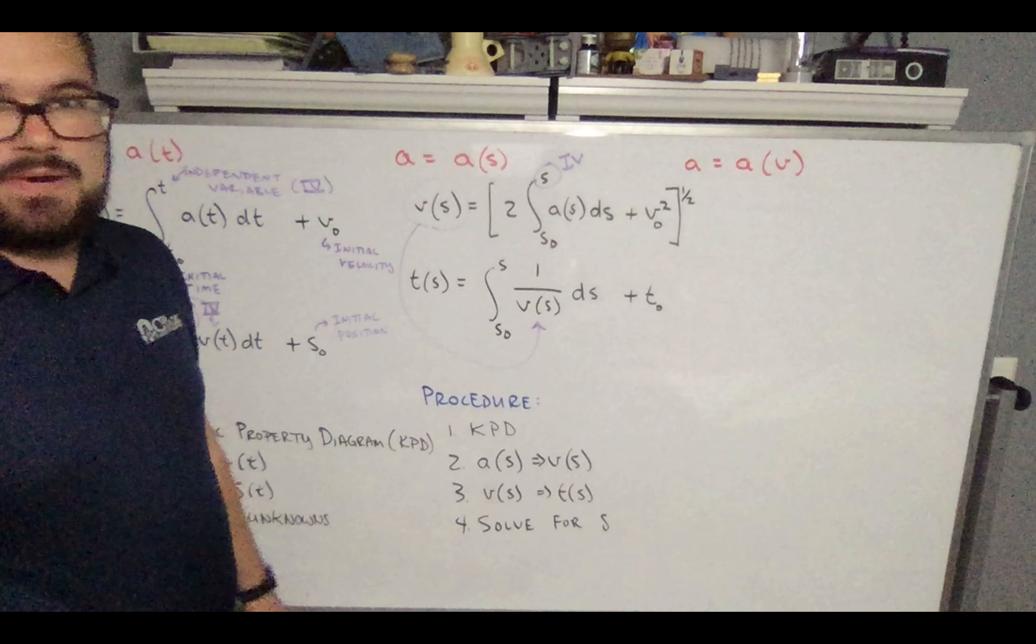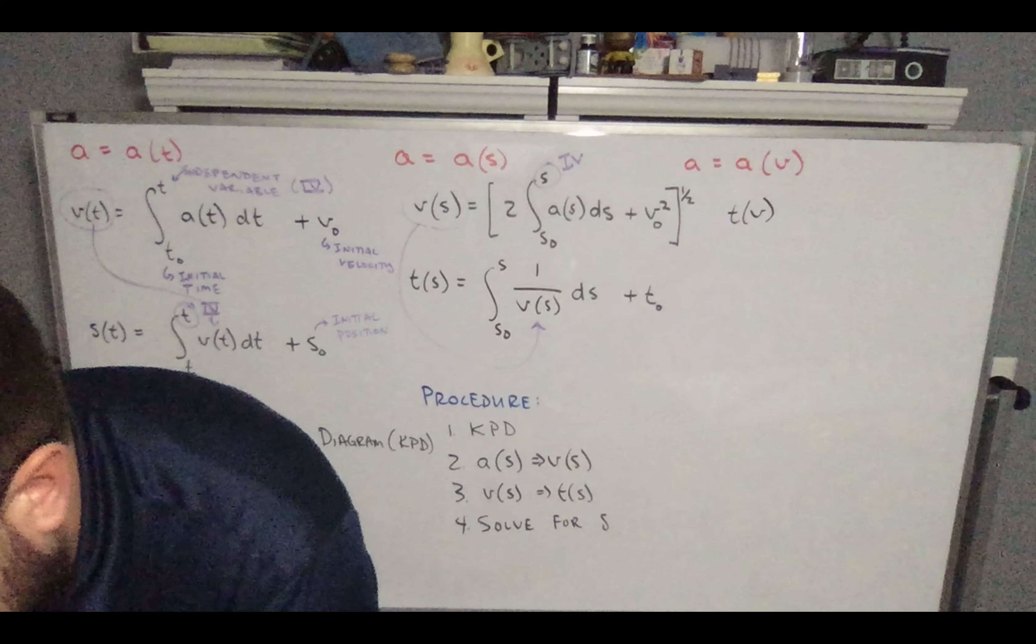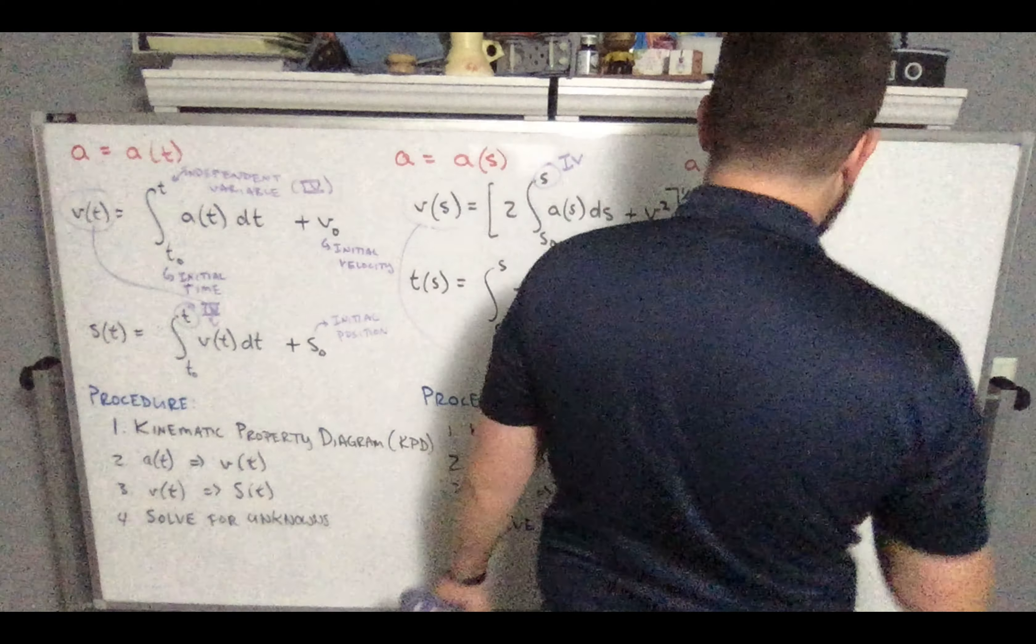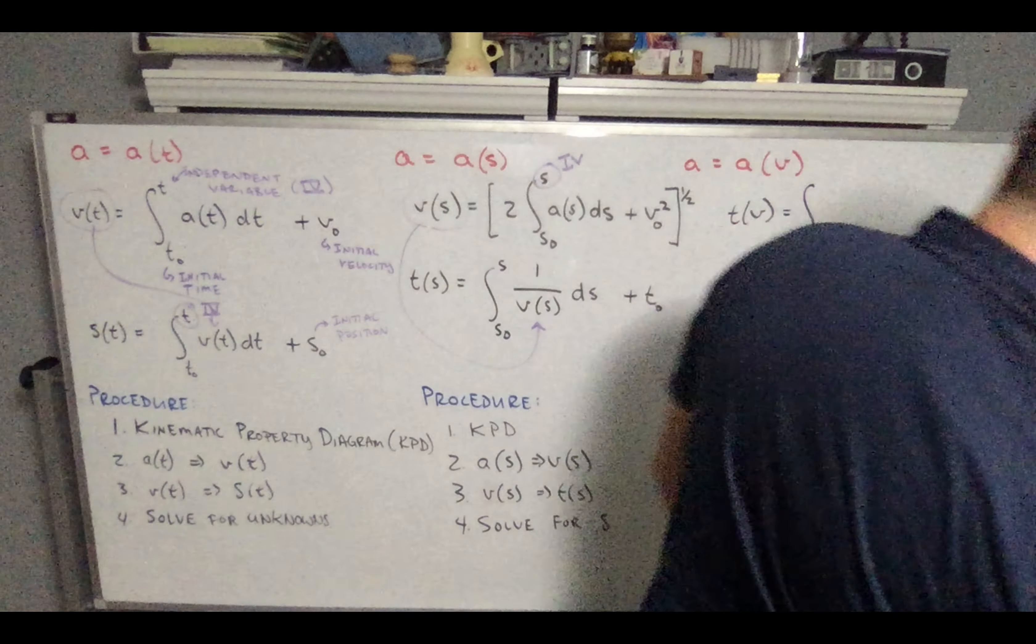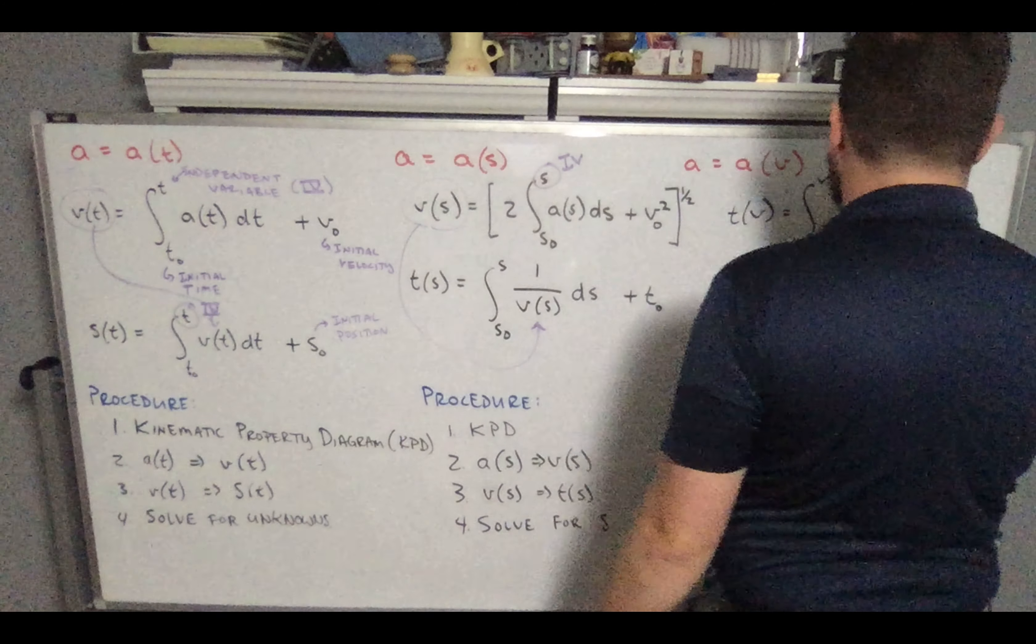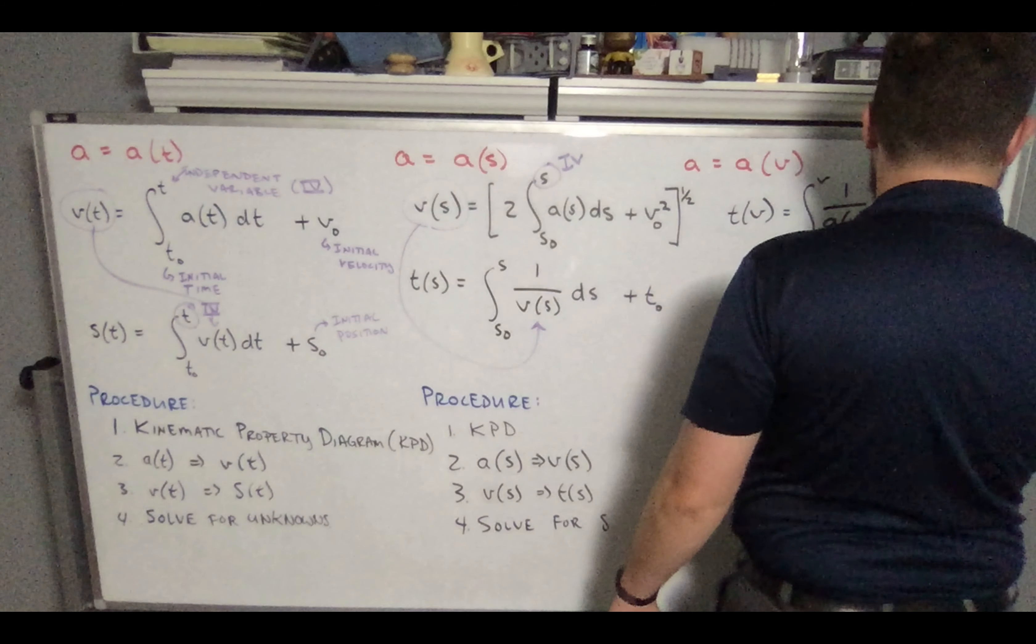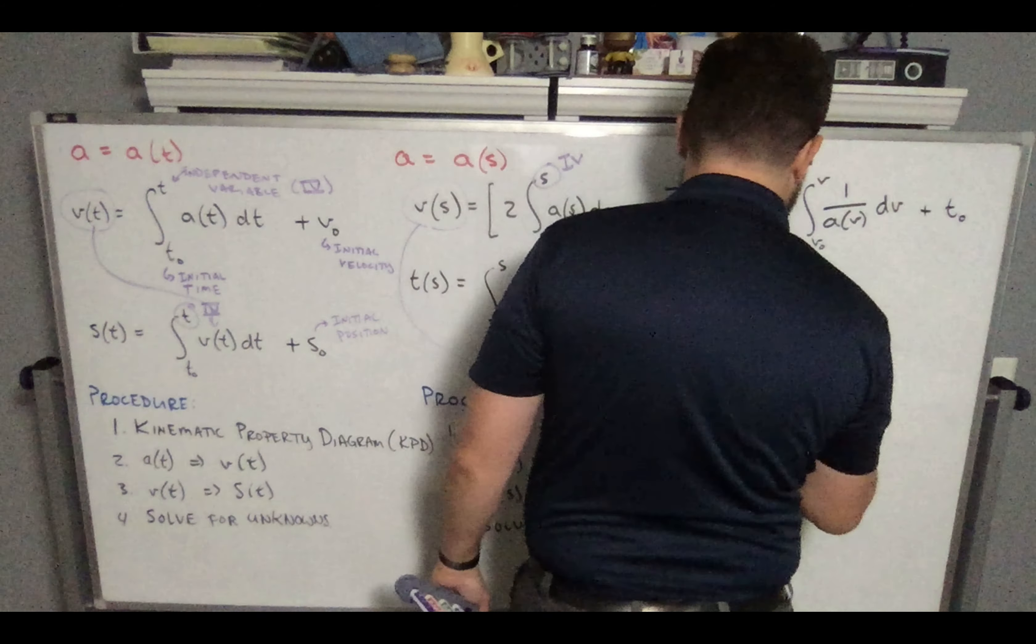Finally, we can look at acceleration as a function of velocity, where we're going to have time as a function of velocity. And we would integrate from v naught to v, where that velocity is our independent variable, one over the acceleration plus the initial time, and we could also solve for position. Again, we've got initial positions, initial time limits.